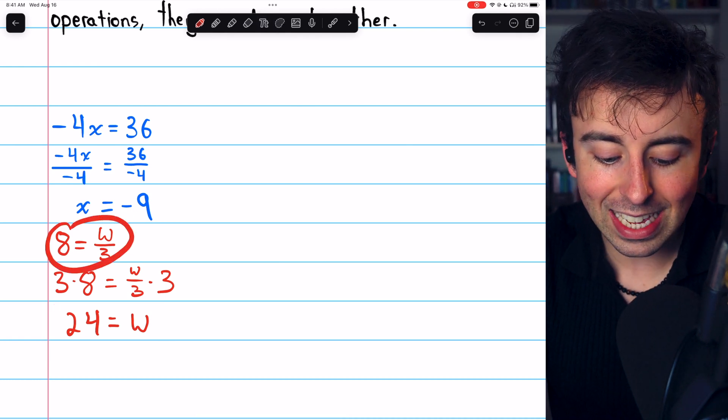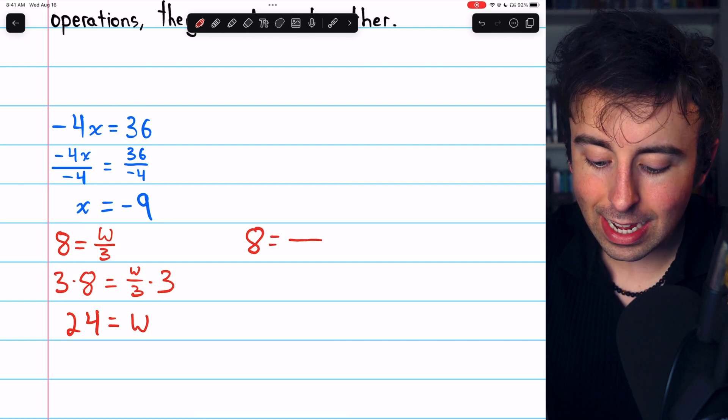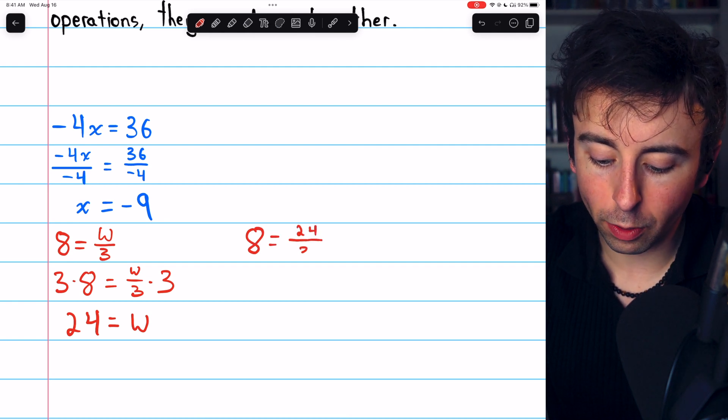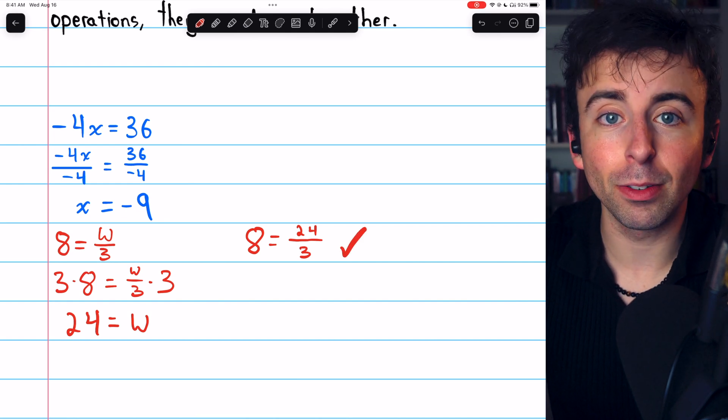We can plug this back into the equation for w to verify that it works. 8 equals 24 over 3. That is a true equation, thus verifying our solution.